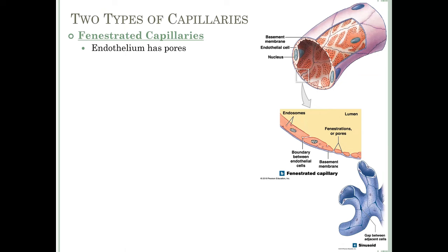The other major type is a fenestrated capillary. These have the endothelial layer and basement membrane, but the endothelial cells are punched through with pores — another word for a pore is a fenestration, hence the name. These pores allow very rapid exchange of water and solutes but are still too small for red blood cells or plasma proteins to pass through.